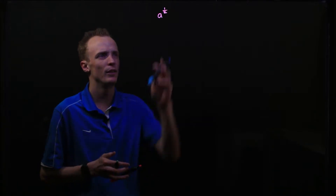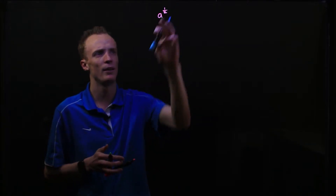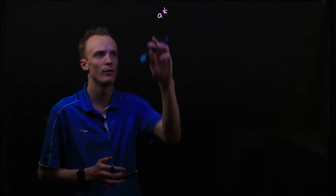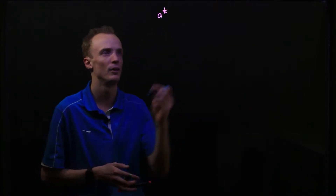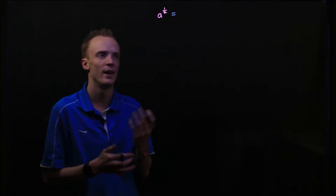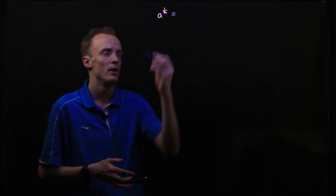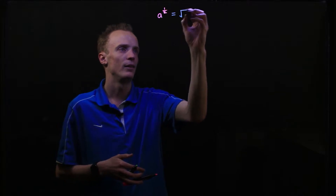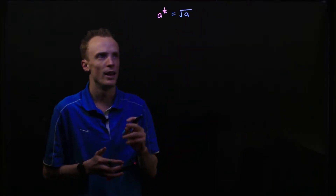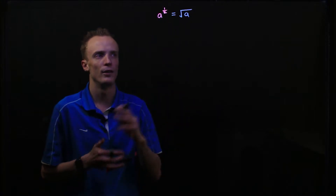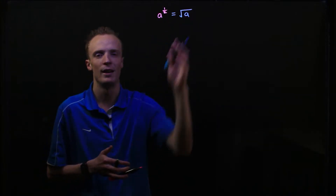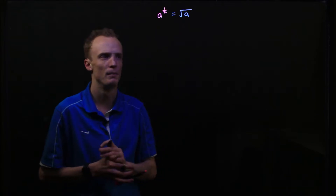When we're looking at this, the denominator part of our index actually refers to what root we need to find of our base value. So what this says is I need to find the second root of my a value. But we say that is the square root of our a value. Now because this top value is a 1, we're just finding the square root of the a value. We'll discuss the numerator in a moment.